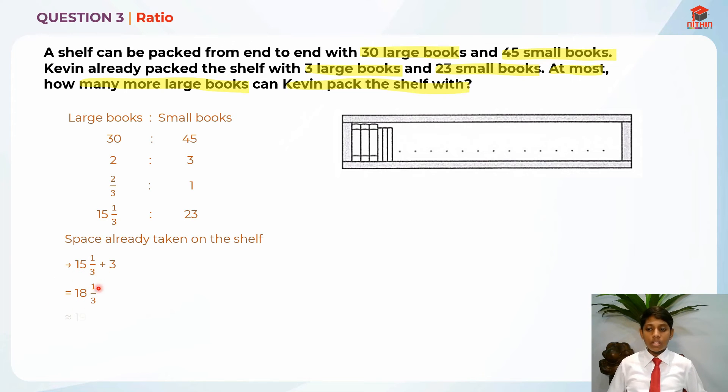So we can easily round this up to 19. And how many more large books can Kevin pack the shelf with? Basically, we are going to take 30 large books minus 19. So the number of more large books Kevin can pack on the shelf is basically 30 minus 19, which will give us an answer of 11.